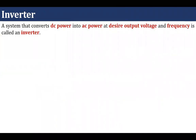Now let us define what is an inverter. An inverter is a system that converts DC power into AC power. Remember, I am saying it converts DC power into AC power — not DC voltage or DC current into AC power. It converts DC power into AC power at desired output voltage and frequency.